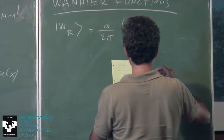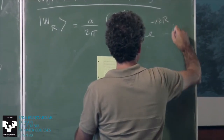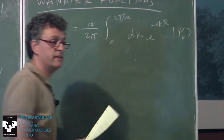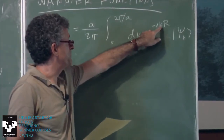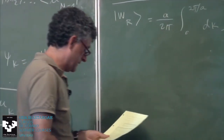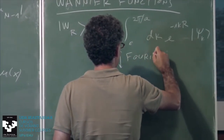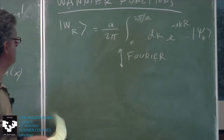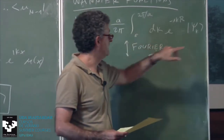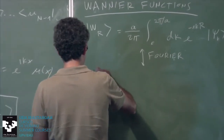The Wannier function is a sort of Fourier transform of a Bloch function. For a given band, you take your Bloch states and do this integral over the entire Brillouin zone of the full Bloch function ψ multiplied by a phase factor which depends on where you are along the one-dimensional Brillouin zone. And you can do the inverse transformation to recover the Bloch function at a specific k.